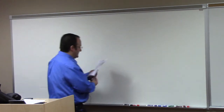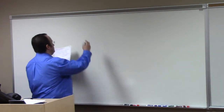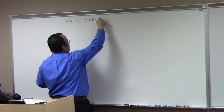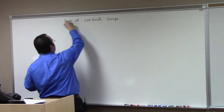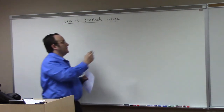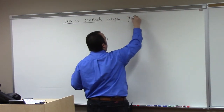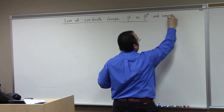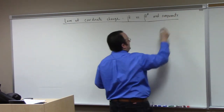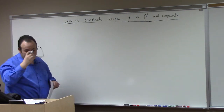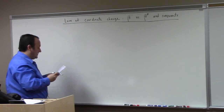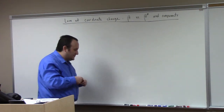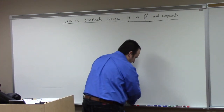Let me do one calculation for you guys, and then I'll take all your questions. What I want to do is look at coordinate change, because I think it's probably wisest to not do that in class Friday. So I want to do it here. I'm going to look at coordinate change for beta versus the dual basis and components. There are a lot of different ways to attack this question, but I think I found a hopefully minimally confusing path.